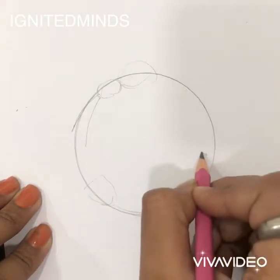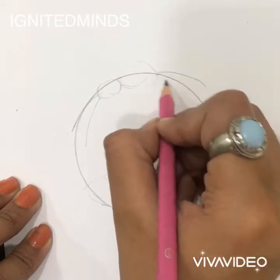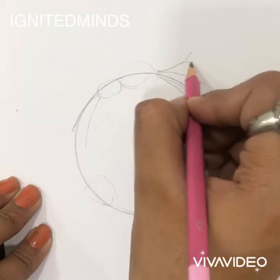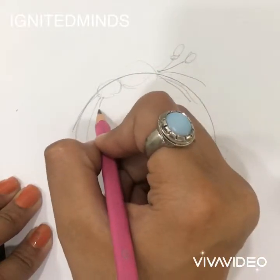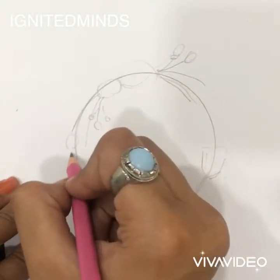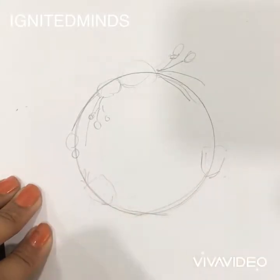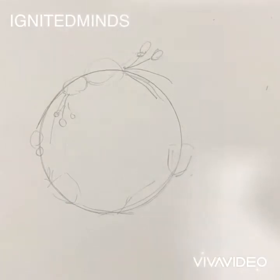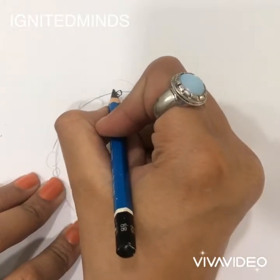Then a tulip maybe on this side, and another one just crossing over it. Now I'm going to draw some leaves — just making lines for the leaf — and some small tulips, buds, and cherries. You can draw any flower you want, anywhere you want. My layout is almost done.